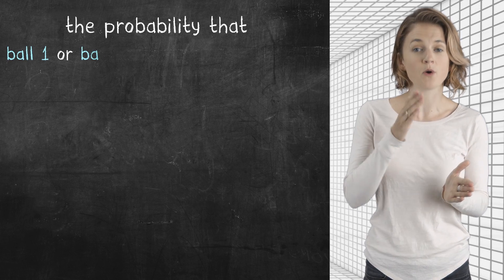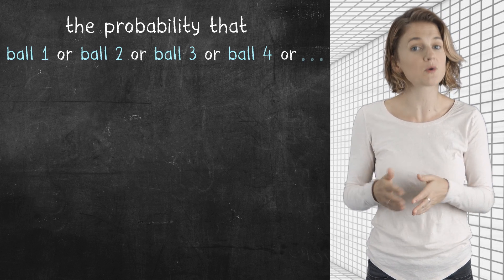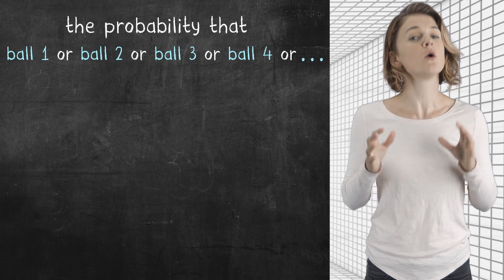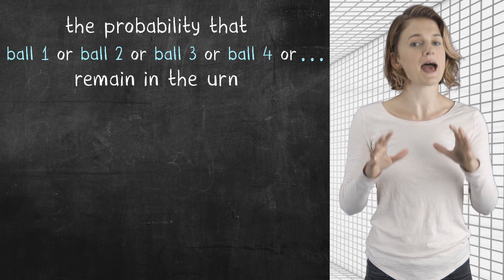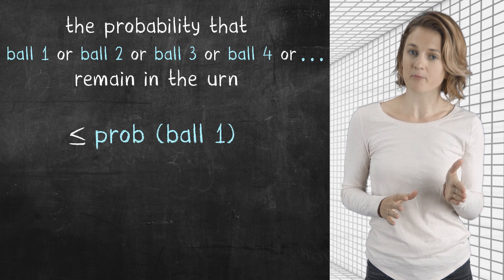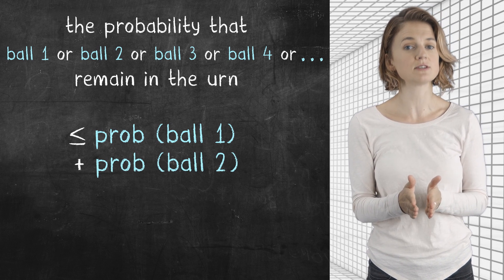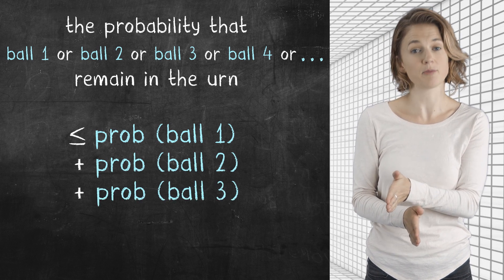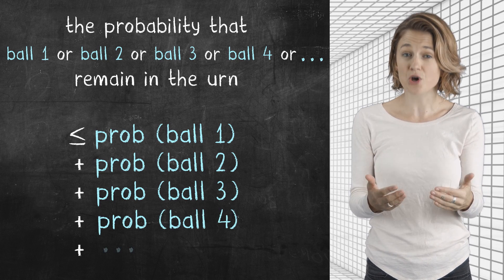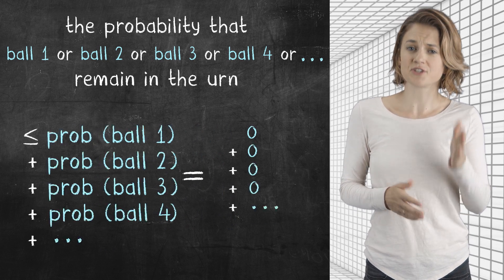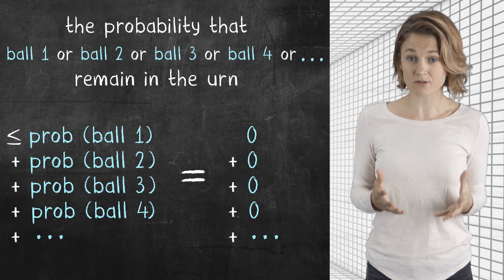In this case, the probability that ball one, or ball two, or ball three, or ball four, or any of the other balls remain in the urn at noon, is at most the probability that ball one remains at noon, plus the probability that ball two remains at noon, plus the probability that ball three remains at noon, and so on. Well, that's just zero, plus zero, plus zero, plus zero, and so on, which is zero.